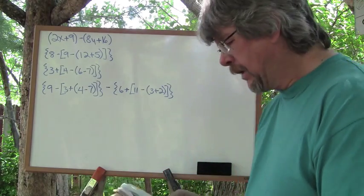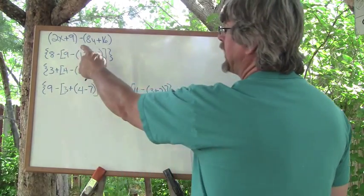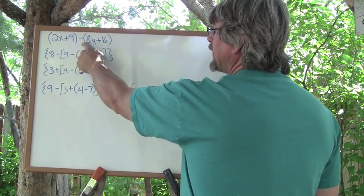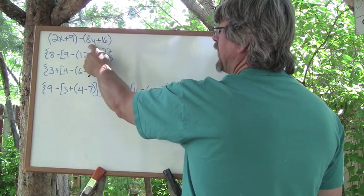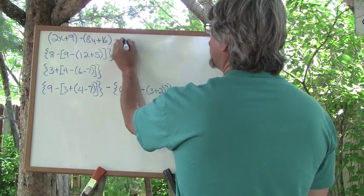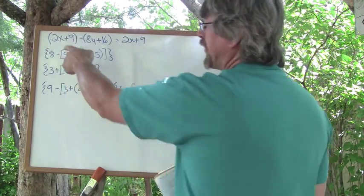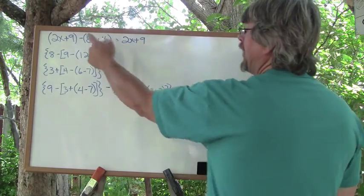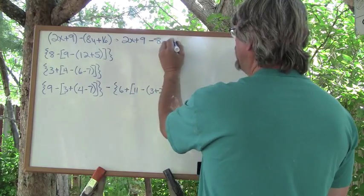I've pre-written these problems. Let's see if I can do these right. We have at the top 2x plus 9 minus 8y plus 16. Notice we're subtracting the group — that's a negative 1. We're going to distribute this into each term here. So we copy this part, 2x plus 9. The parenthesis are just simply to show you the group, but once you recognize that's the group, you can leave the parenthesis off. This becomes minus 8y minus 16.